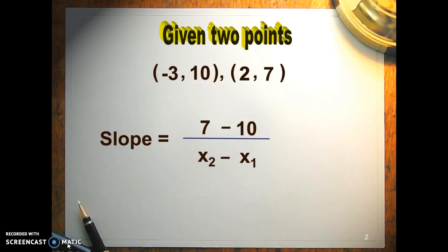And then, with the second x and the first x, you subtract. Be careful with the double negative: 2 minus negative 3. And then simplify that, and you get negative 3 over 5. That's it.